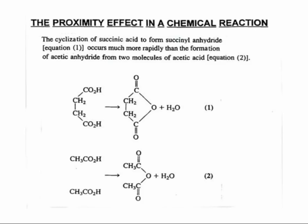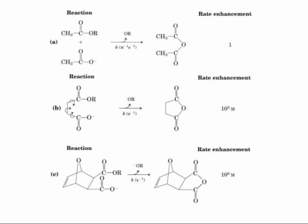The chemical example of succinic anhydride formation shows how having two reacting groups in proximity to each other can facilitate reaction. Instead of waiting for a random collision to bring two carboxylic acid groups together, the proximity of the two carboxylate groups in succinate facilitates their reaction. This figure shows the rate enhancements for proximity effects during the formation of carboxylic anhydrides using constrained substrates. By placing the reacting groups in the correct proximity and orientation, the chemical reaction can be enhanced by a factor of 10 to the 8th.